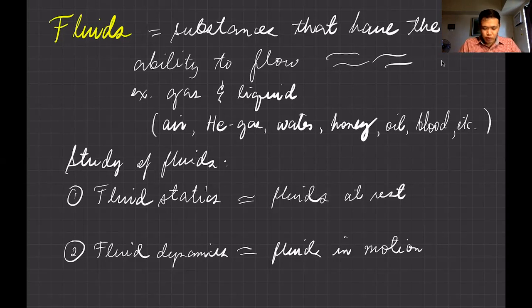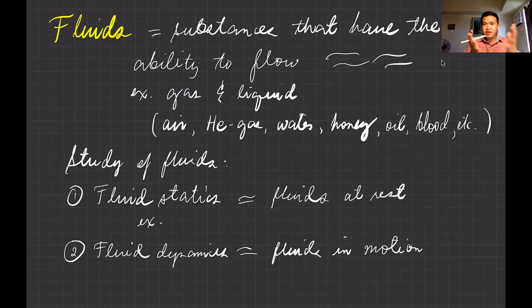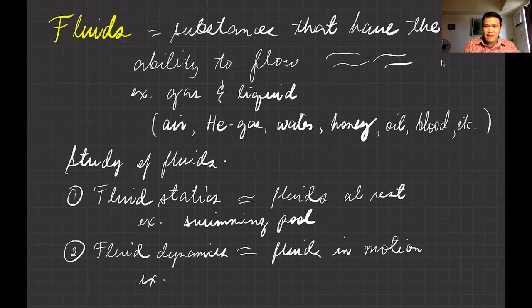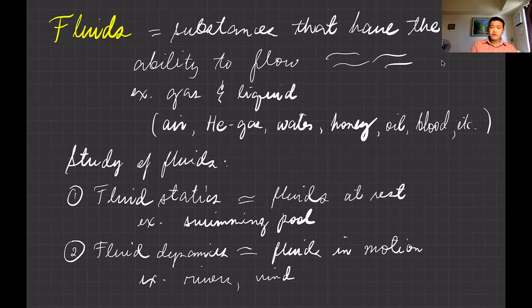There are two main branches of fluid mechanics. The first is fluid statics, which deals with the study of fluids at rest — for example, stationary water in a swimming pool. The second is fluid dynamics, which deals with fluids in motion. Examples are wind and water flowing in a river.